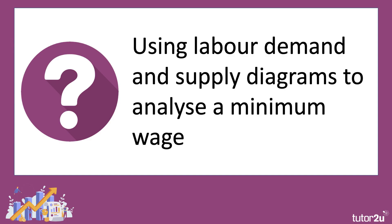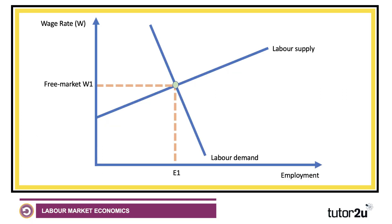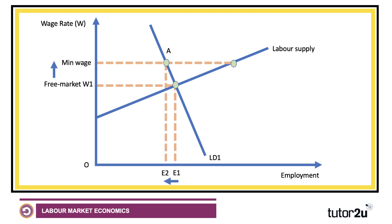If you're going to use a diagram, you're probably going to think about labor demand and supply. You could contextualize this around security workers or people working in hospitality. The minimum wage of course has to be set above the free market wage to have any effect. If it does, other things being equal, we'd expect employment to contract from E1 to E2, and more people to offer themselves for work — labor supply would expand from E1 to E3 — so potentially there is some real wage unemployment created, an excess supply of labor.